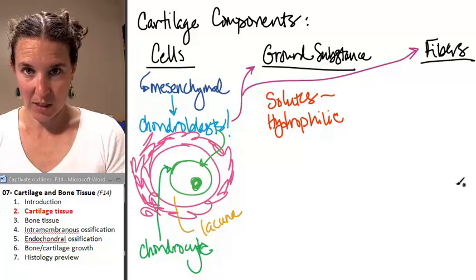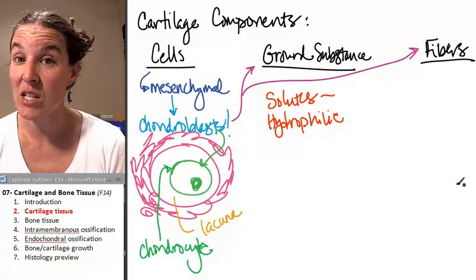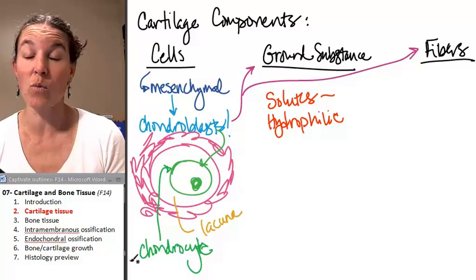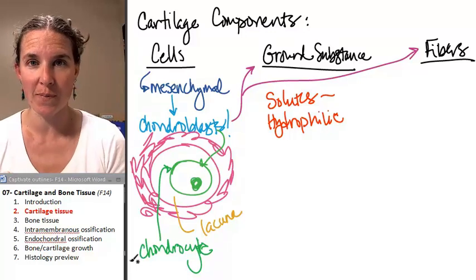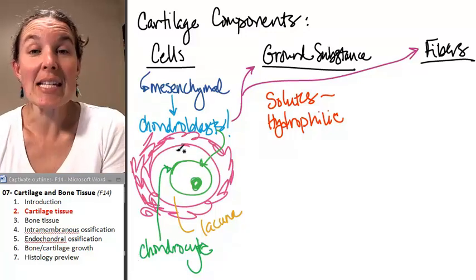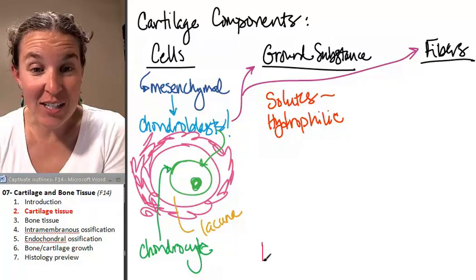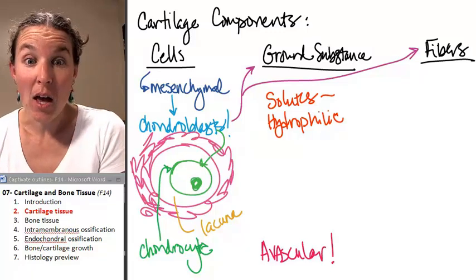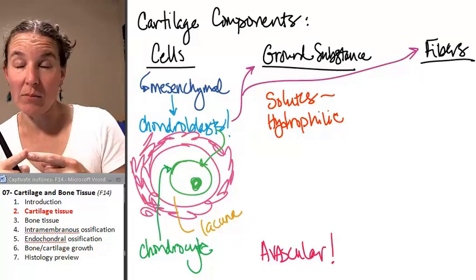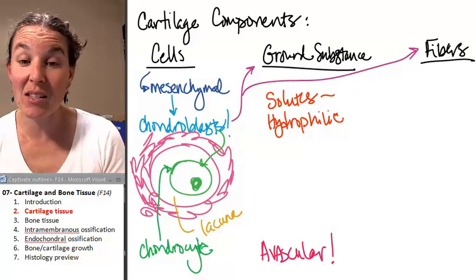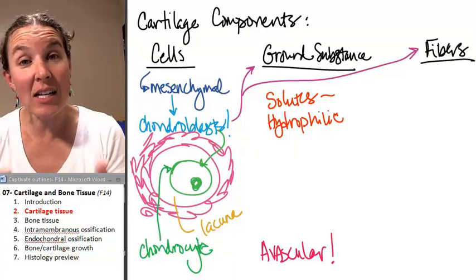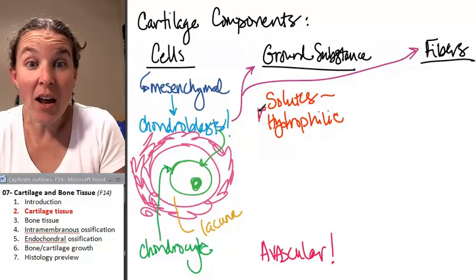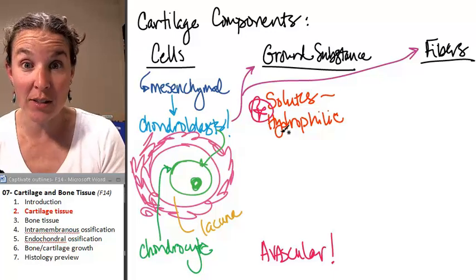We know that epithelial tissue is avascular. We know that connective tissue is vascular, usually highly vascular, lots of blood running through your connective tissue. Cartilage is the exception. Cartilage is avascular. Yeah, true story. It's the only connective tissue that does not have a blood supply going through it. So why does it matter that all the solutes in the ground substance are hydrophilic?